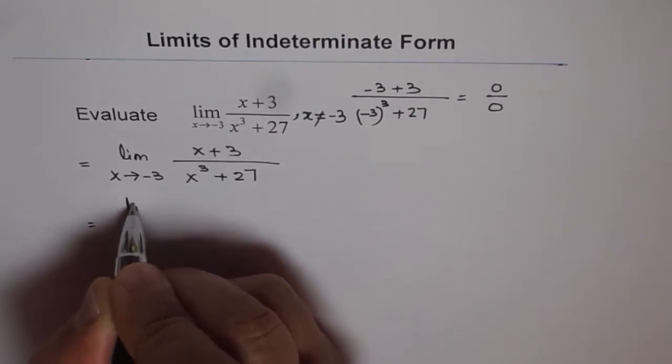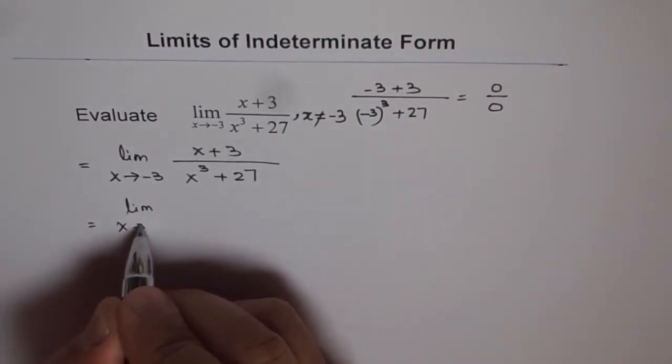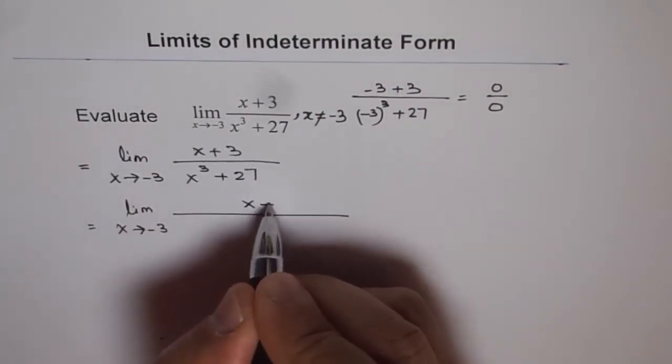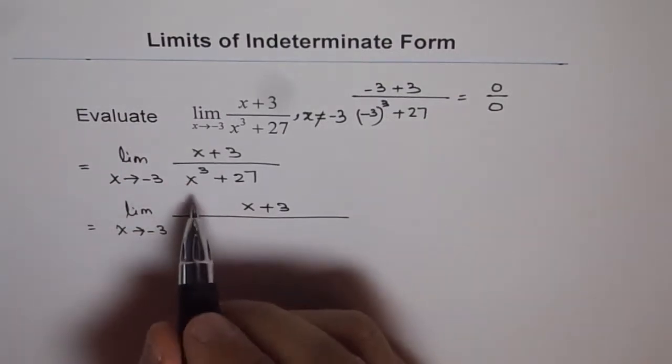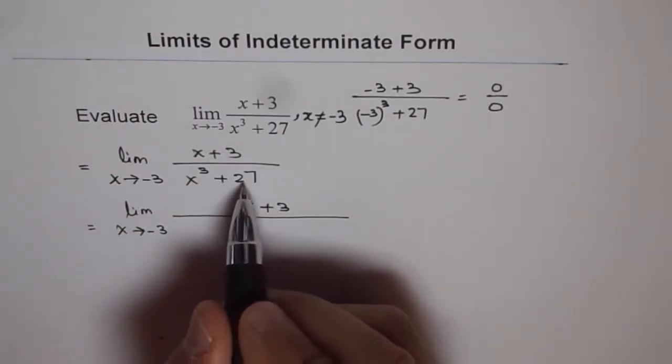Now, the denominator can be factored. So let's factor the denominator and see what we get. In the numerator, we have x plus 3. The denominator is of the form a cube plus b cube, rather 3 cube. 27 is 3 cube.